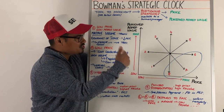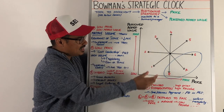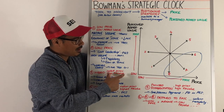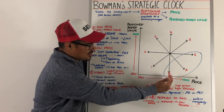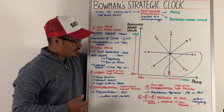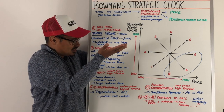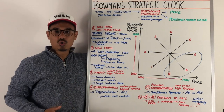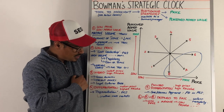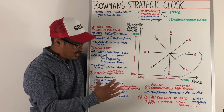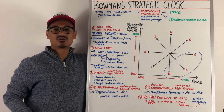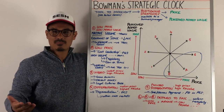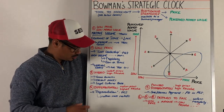Strategic clock position number three is referred to as hybrid. We're thinking about modest prices — more towards the low end of the scale — but high perceived added value. So this is going to be good quality goods at roughly decent prices. If you've got a loyal customer base, you will be successful here, and it may be important to have some form of brand image.